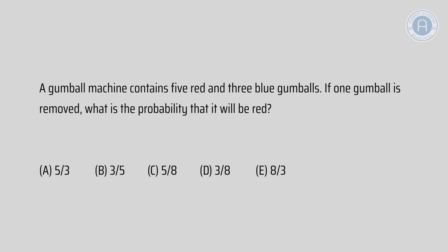So, we need to know the total number of gumballs in the machine. We're told that there are 5 red gumballs and 3 blue gumballs. Now, 5 plus 3 gives me 8. So we've already worked out our denominator, which is the number on the bottom of the fraction, is going to be 8. That is the total number of outcomes as there are 8 gumballs in the machine.